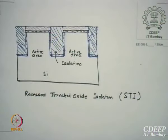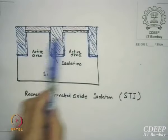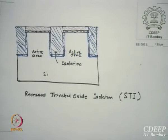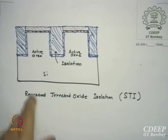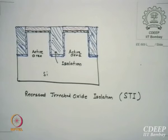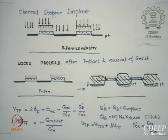Yesterday we were looking for isolation, and the last thing we did was the trench oxide oscillations. We now have an active area which is separated by deep trench filled up with oxide. Now I will start with today. If we are not doing trench oxide and are doing a normal low-cost process, then another process step is needed, which is called channel stopper.